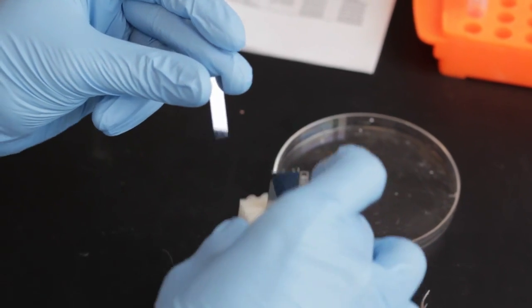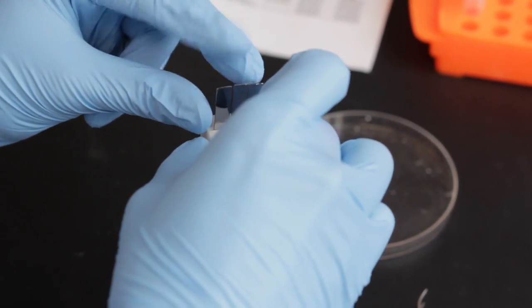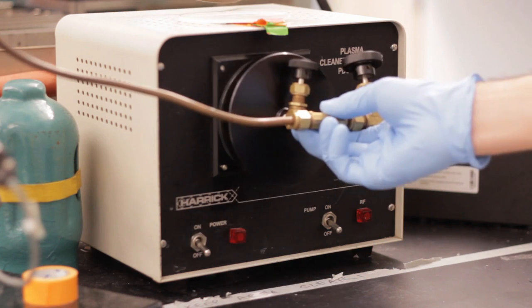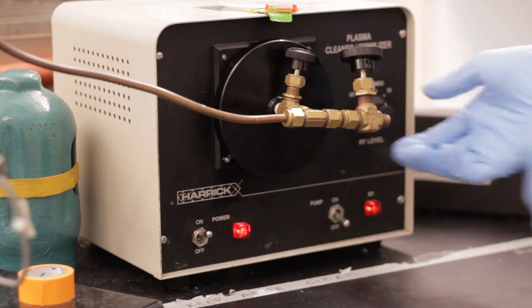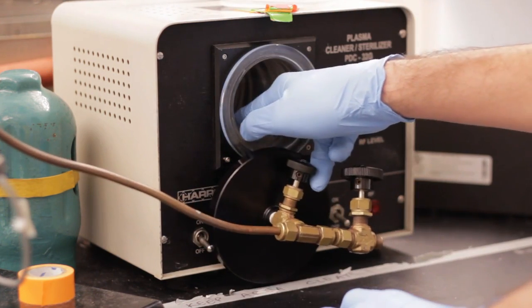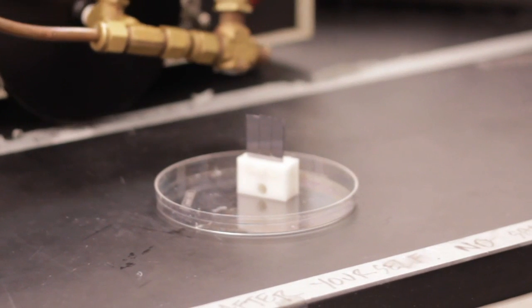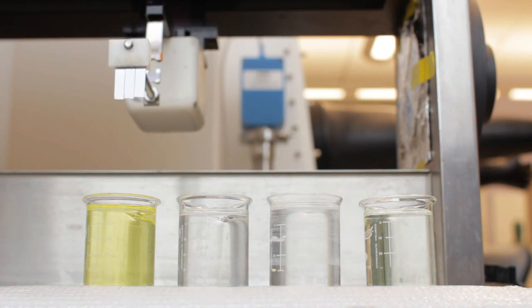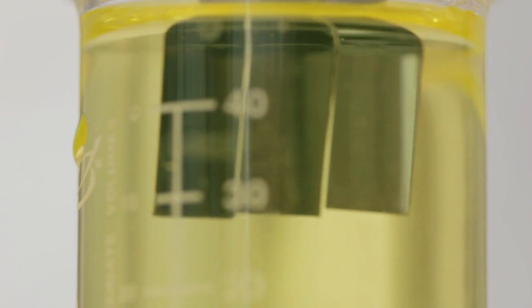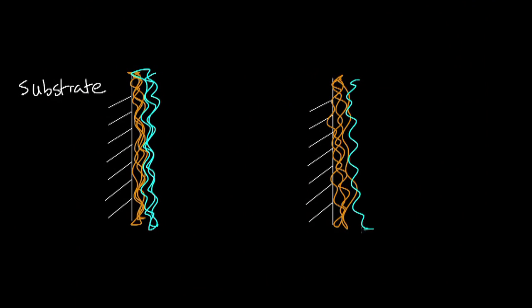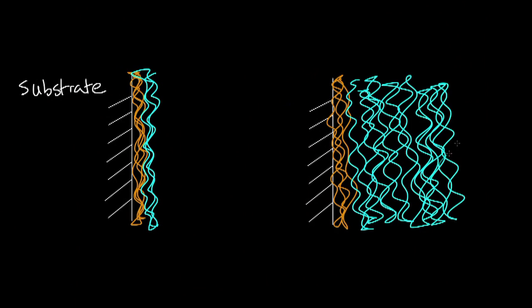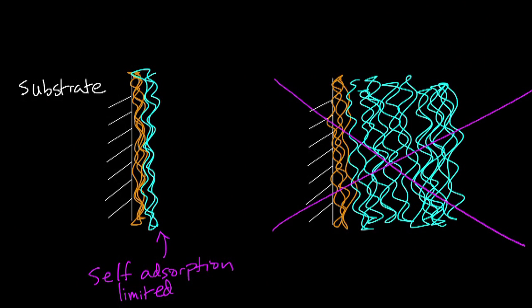We assemble these films using a simple dip method. First, we take our substrate or surface that we wish to coat and bombard it with free radical oxygen in an instrument called a plasma cleaner. This not only cleans the surface of contaminants, but also leaves the surface with a negative charge. Next, we take our substrate and dip it into a solution of positively charged molecules. The molecules in solution bind to the substrate because of the charge interactions. This process is self-absorption limited, meaning that once the newly adsorbed layer neutralizes the charge sites on the surface, additional molecules will not bind.